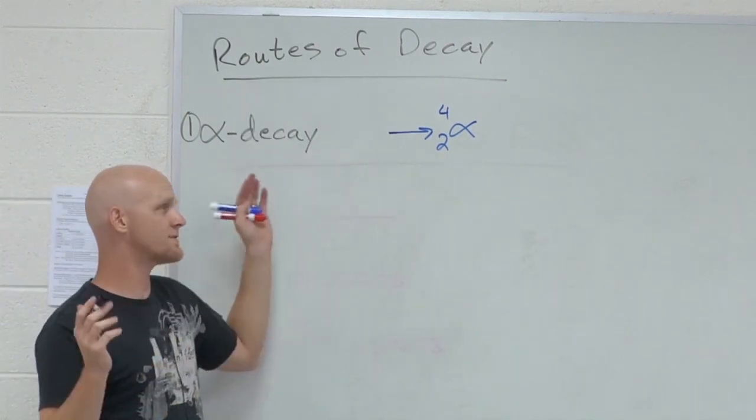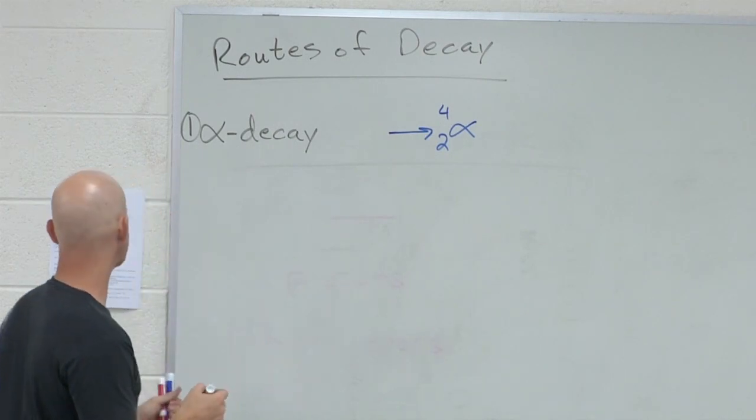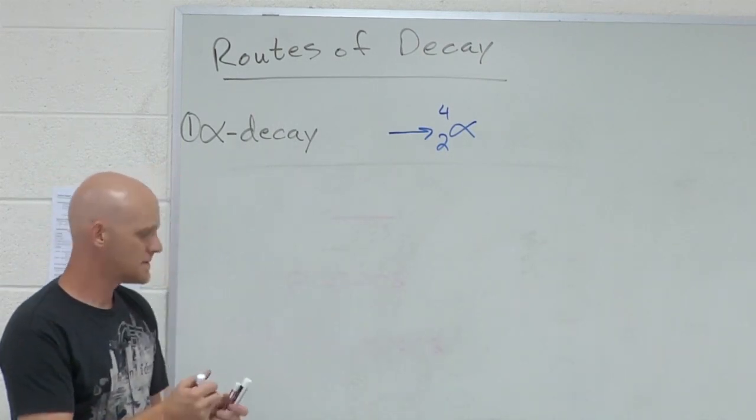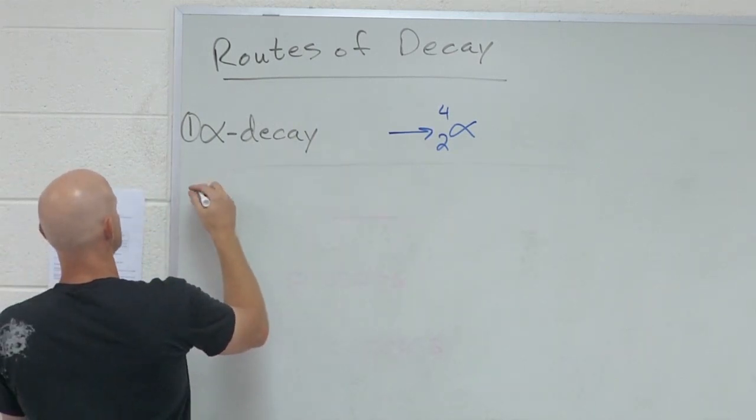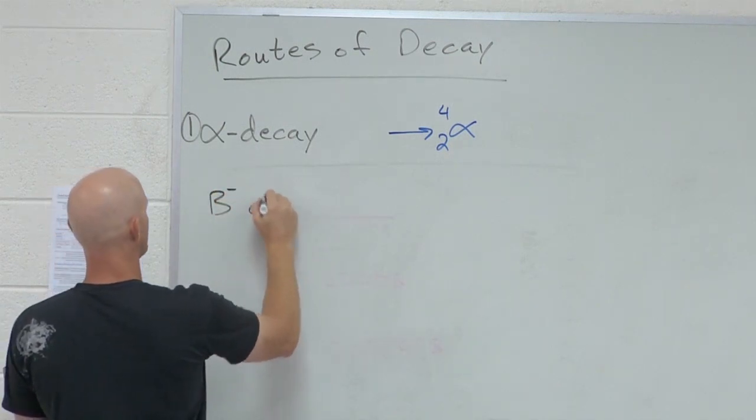The rest of the reaction is whatever it is, but you have to have an alpha particle as a product for it to be an alpha emission. The second type will be beta decay, but technically there's three different types of beta decays. So we got to be a little bit careful.